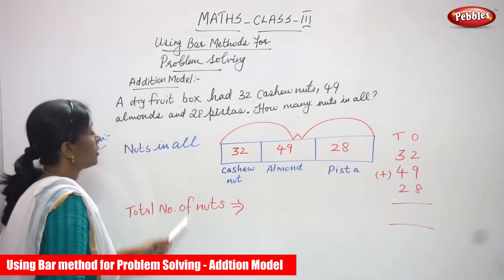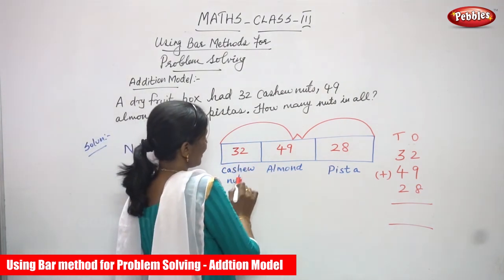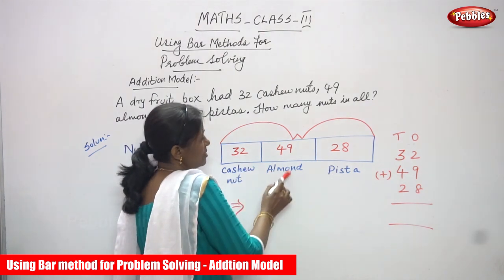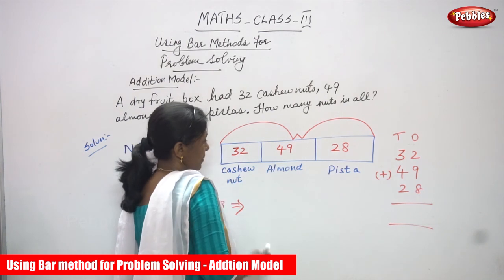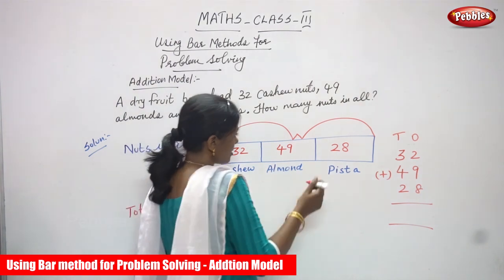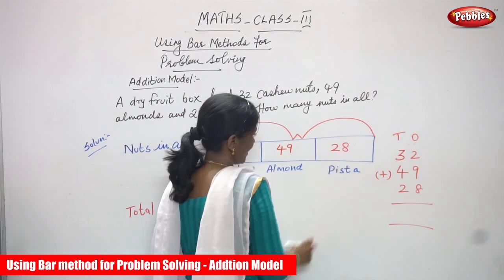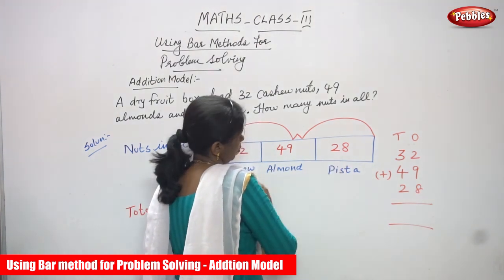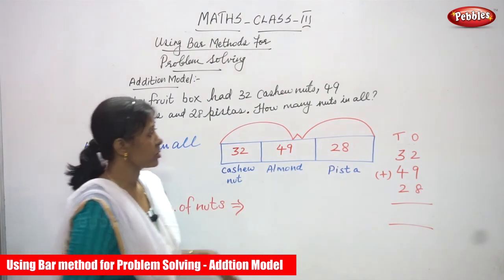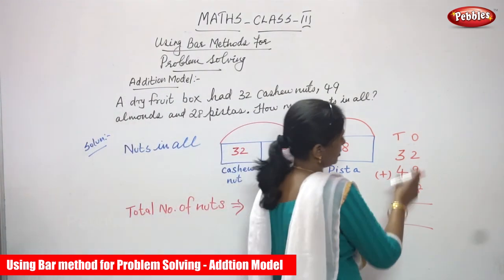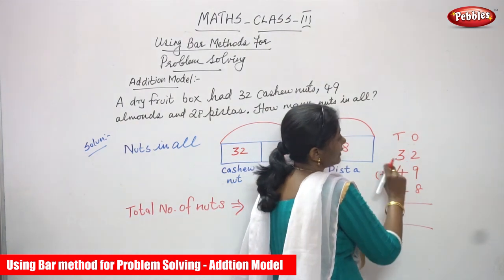So 'nuts in all' — this is also a bar model. The number of cashew nuts is 32, the number of almonds is 49, and the number of pistas is 28. You have to add them together and find the total number of nuts. I'm going to add everything. These are all two-digit numbers: 32, 49, and 28.